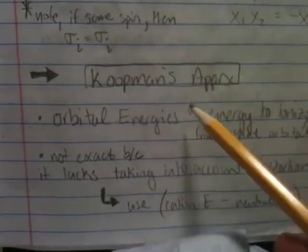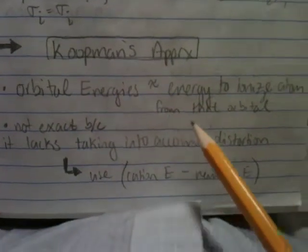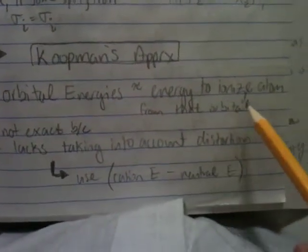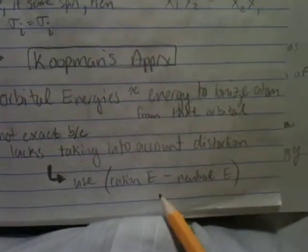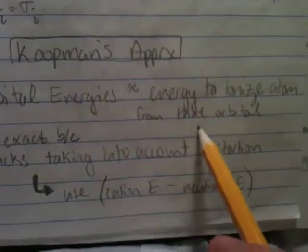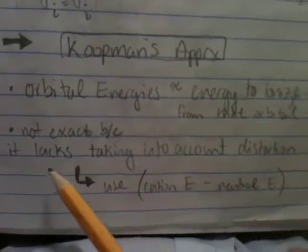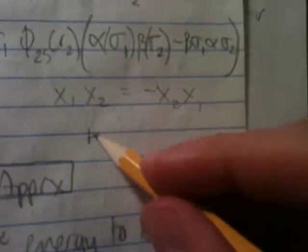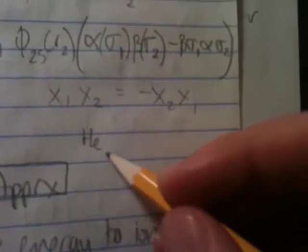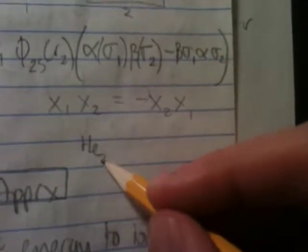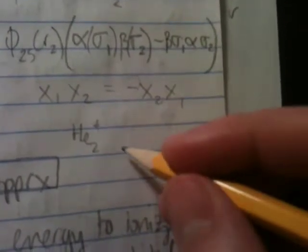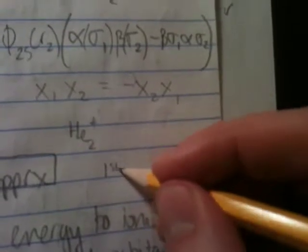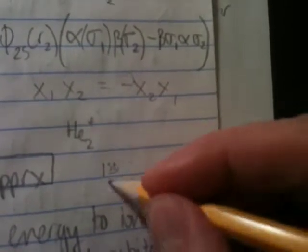Koopman's approximation says that orbital energies are approximately equal to the energy needed to ionize the atom from that orbital. So this is useful if you have, let's take helium for example.